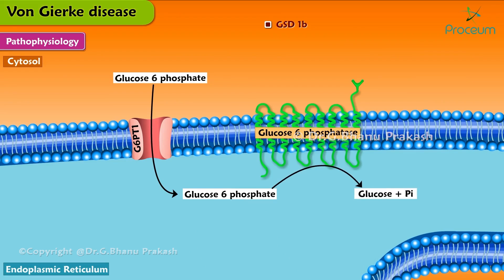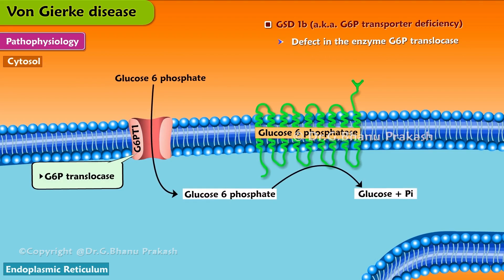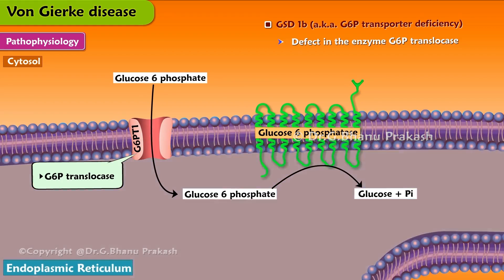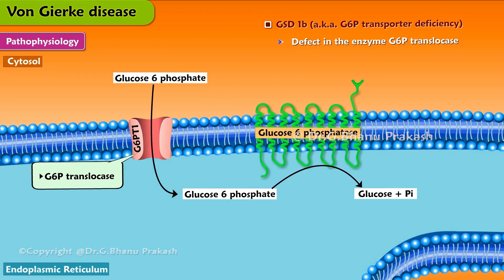GSD1B is also known as G6P transporter deficiency, and is caused by a defect in the enzyme G6P-translocase that is functionally associated with the G6Pase. Translocase transports glucose 6-phosphate into the endoplasmic reticulum, where it is hydrolyzed by glucose 6-phosphatase. The enzyme also plays a role in neutrophil homeostasis and function.